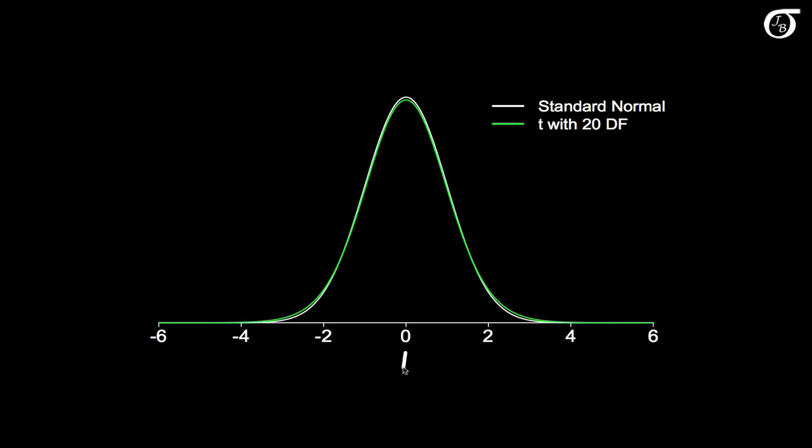The median is right here at 0, and the mean is also 0. The variance is the degrees of freedom over the degrees of freedom minus 2, in this case that's 20 over 18. Note that's a little bigger than 1, which is the variance of the standard normal distribution.